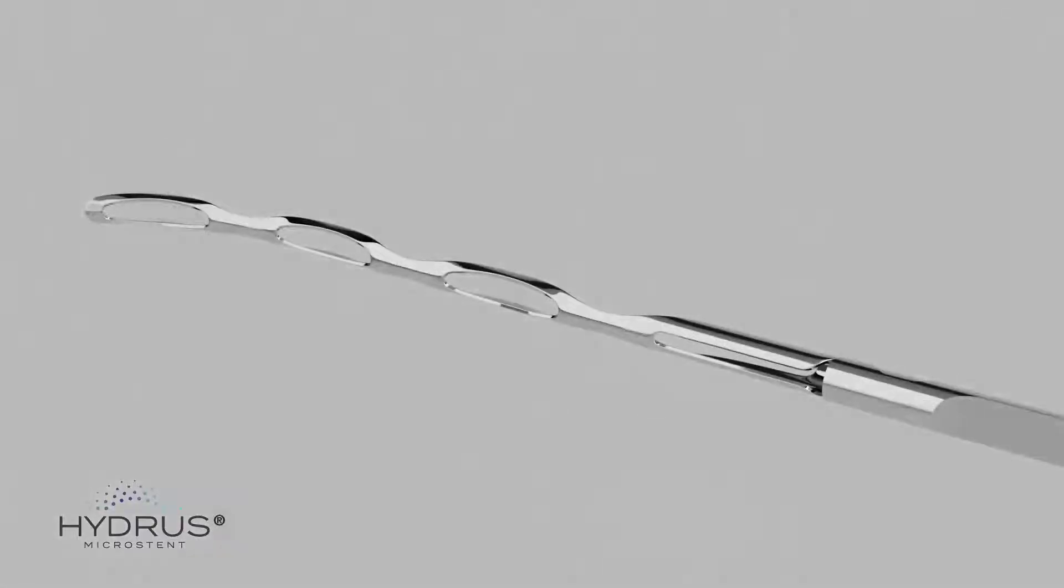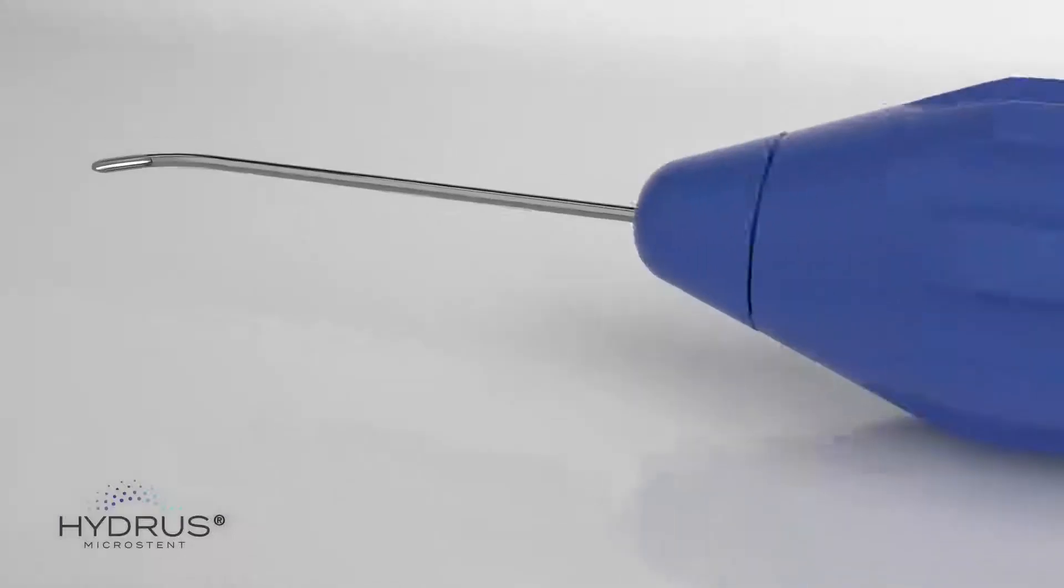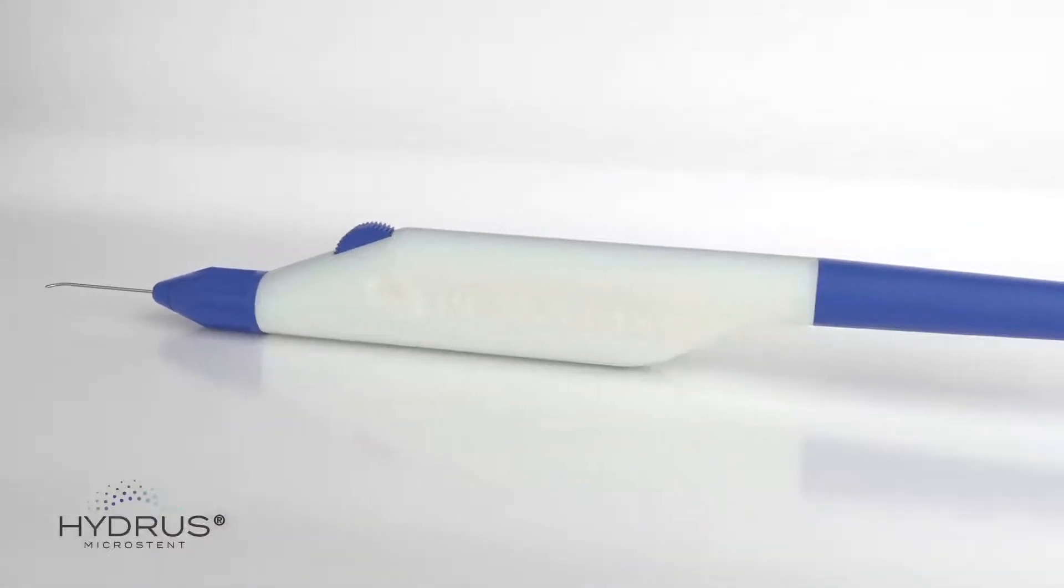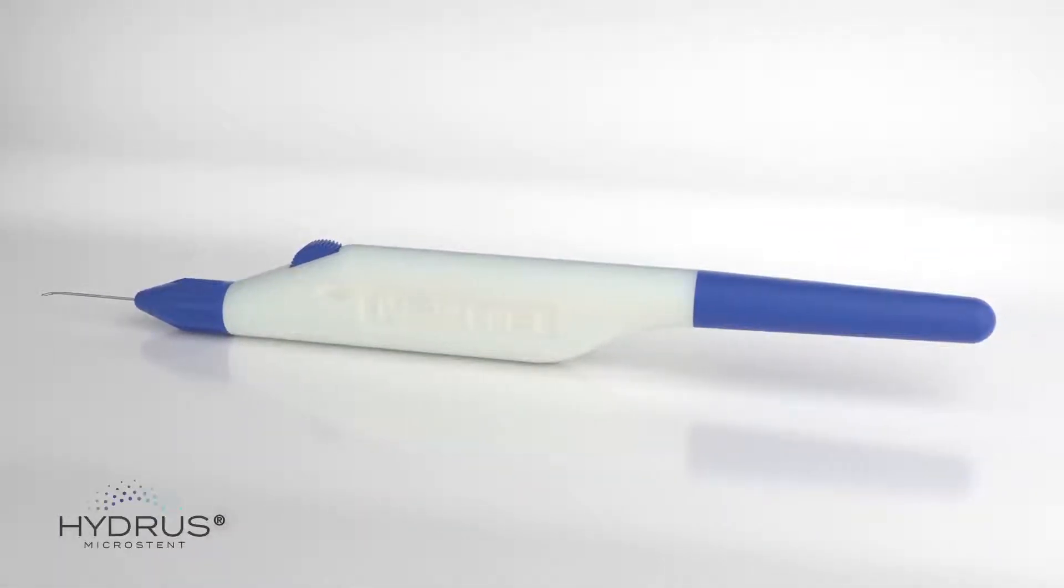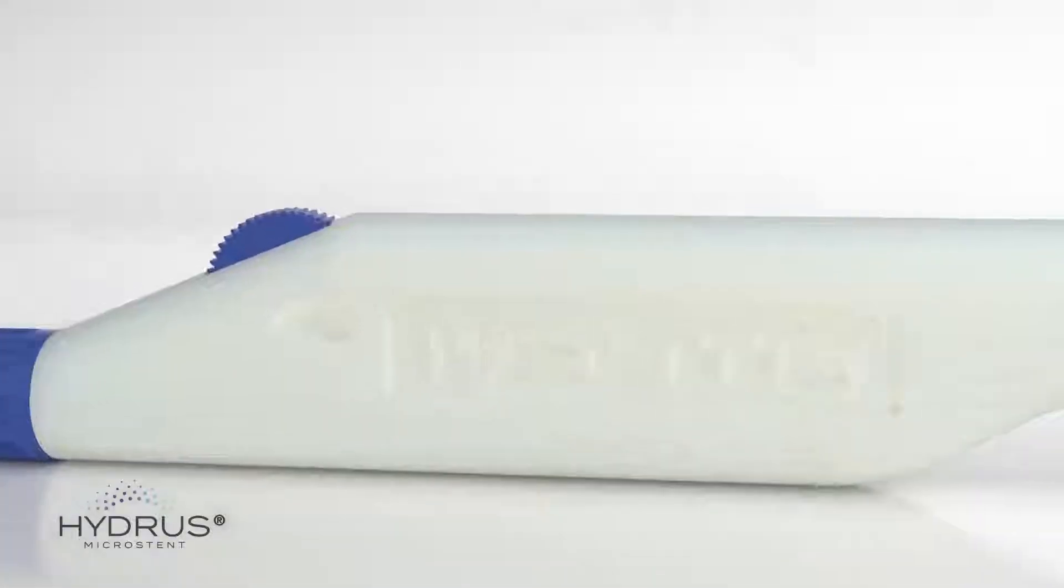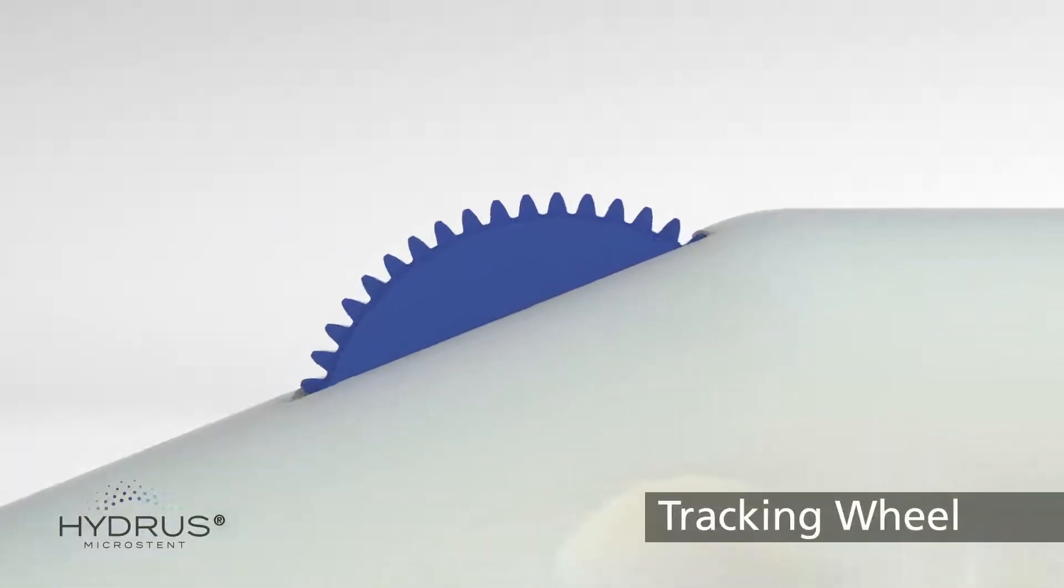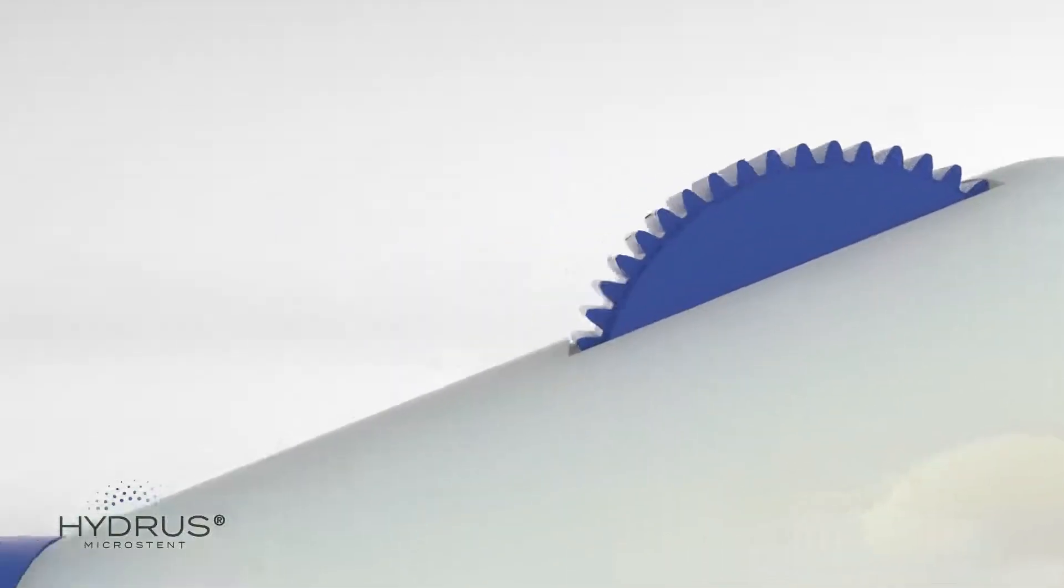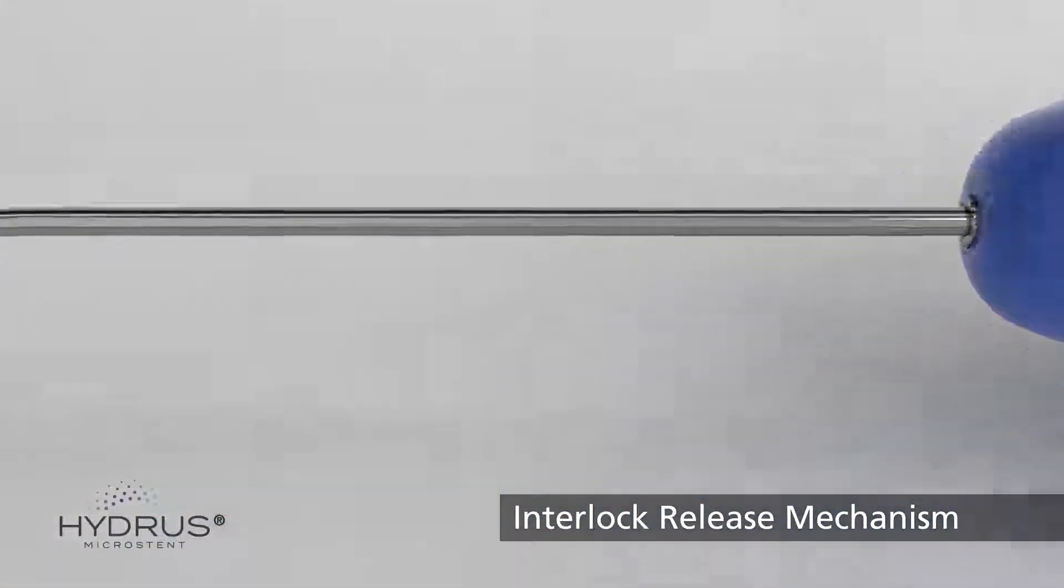The Hydrus Microstent is preloaded into the ergonomic and easy-to-use Hydrus Delivery System. The Hydrus Delivery System utilizes a tracking wheel for microstent advancement and a proprietary interlock release mechanism for precise implantation of the Hydrus Microstent into Schlem's canal.